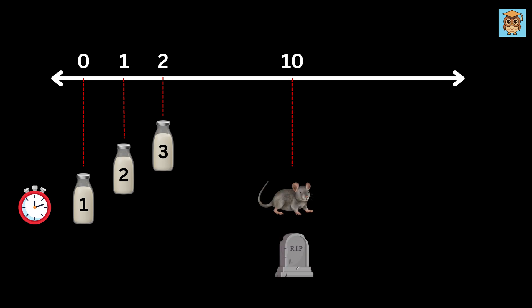If the rat dies after 10 hours, the first bottle is poisonous. If the rat dies after 11 hours, then the second bottle is poisonous. If the rat dies after 12 hours, the third bottle is poisonous, else the fourth bottle is poisonous. Brilliant, isn't it?